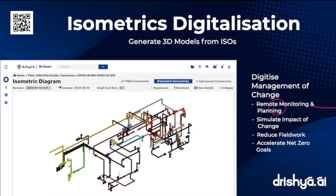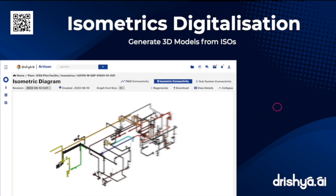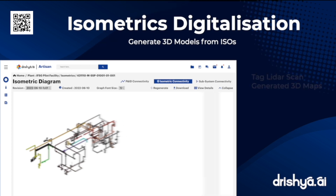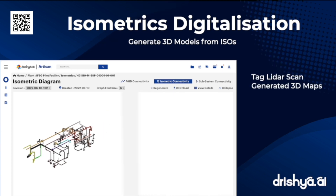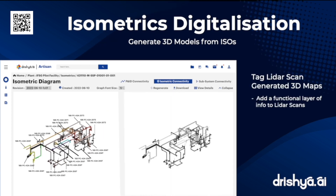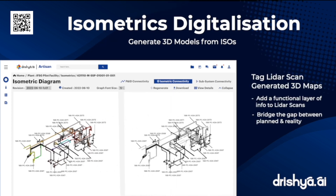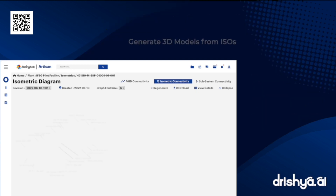This helps your organization quickly and efficiently march towards its net-zero goals. The Artisan digital twin can also tag 3D maps generated by LiDAR scans, bridging the gap between the planned and actual structures.